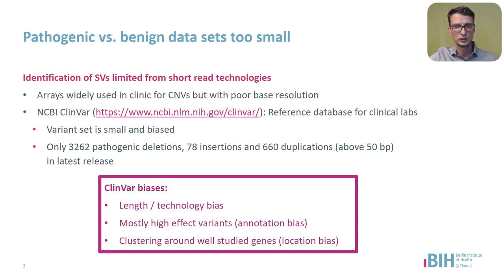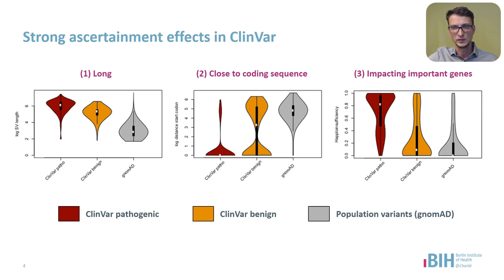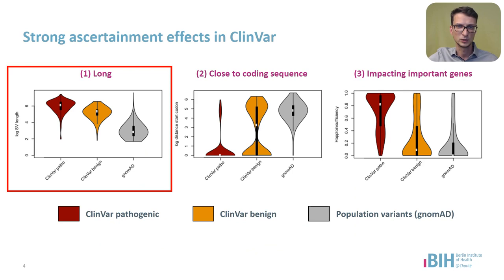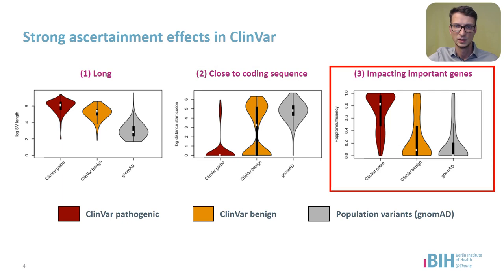Typically, we would want to look at a large number of known disease-causing, pathogenic or otherwise known functional SVs and learn from those how to prioritize new SVs. However, the existing datasets are rather small and more importantly biased due to their historic ascertainment. In ClinVar, the reference database for clinical labs, we can immediately see a strong bias towards deletions and against insertions. If you look at these ClinVar SVs compared to population variants in gnomAD, we see that pathogenic variants are much longer. They're also very close to coding genes and those genes tend to be haploinsufficient. This sounds like the kind of SV that was the easiest to discover over the years. But are these SVs really representative of all functional SVs, like those that have a functional impact due to gene regulatory changes?